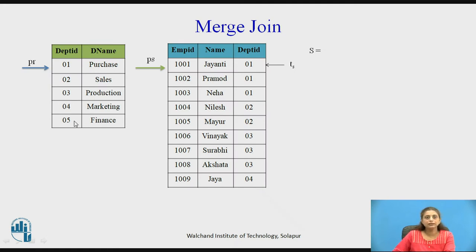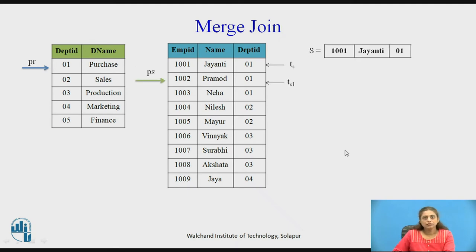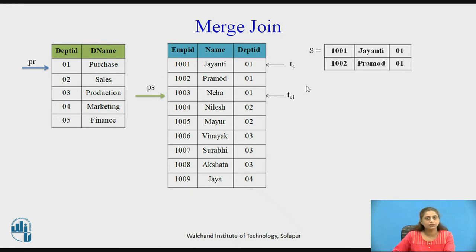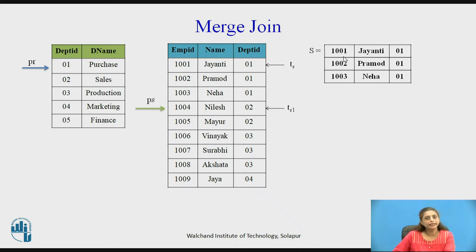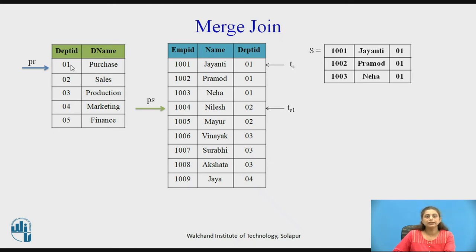Let us switch the relation sequence — now consider department as the outer relation and employee as the inner relation, and see how the algorithm works. First, fetch all records having the same value for the join attribute, which is department id. The first record is 1, the second record also has department id 1, so it is taken into set S. The third record also has the same value and is taken into S. In the previous scenario department id was a primary key, giving only one record. Here, employee id is the primary key and department id is a foreign key, so we get 3 records. The value 2 is not the same as 1, so we stop fetching records for S.